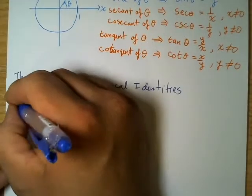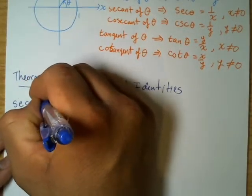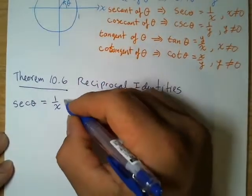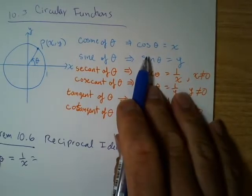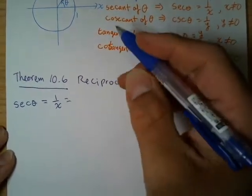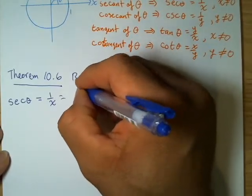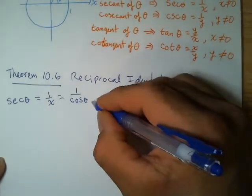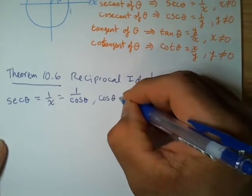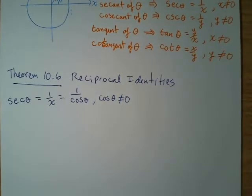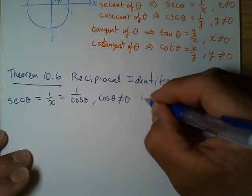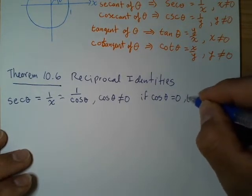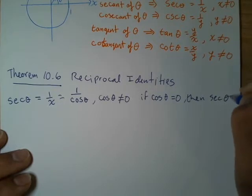The secant of theta: we called it 1 over x, but since x equals cosine of theta, secant of theta can also be written as 1 over cosine of theta, as long as cosine of theta is not zero. If cosine of theta does equal zero, then secant of theta is undefined.